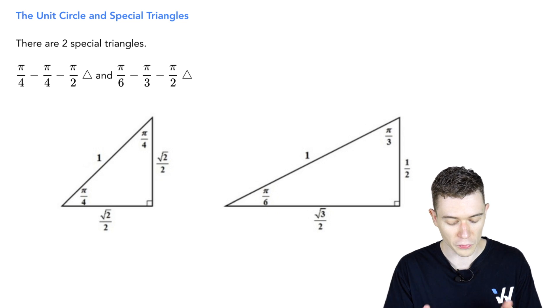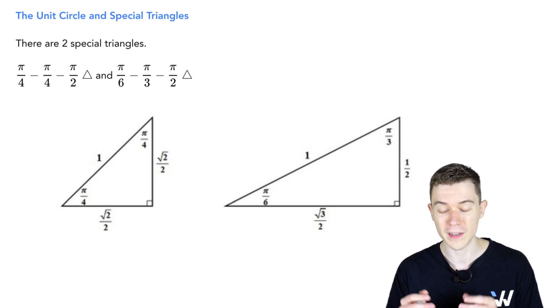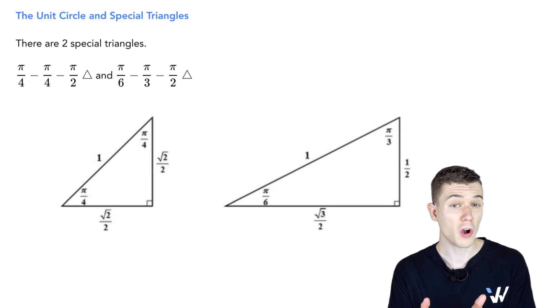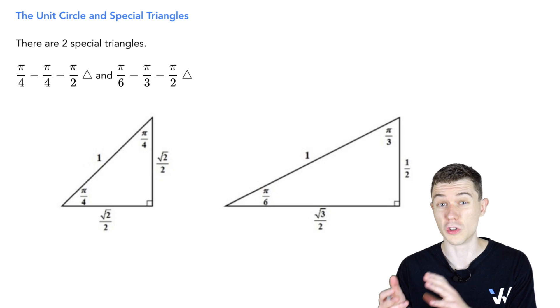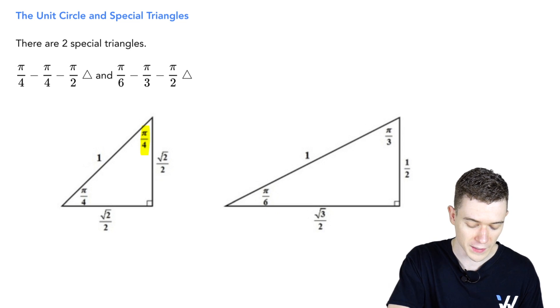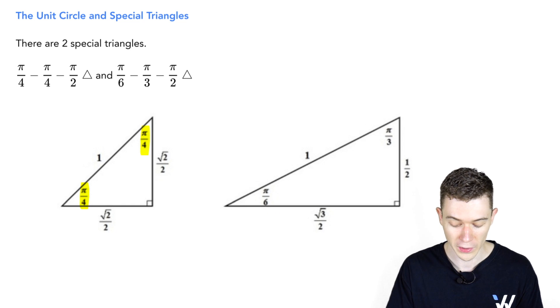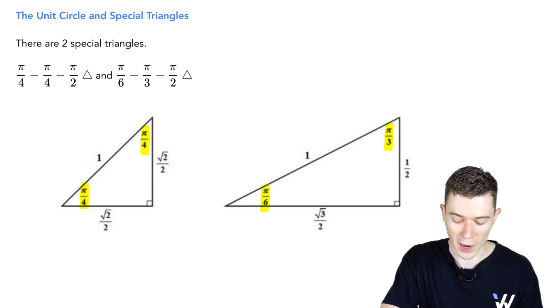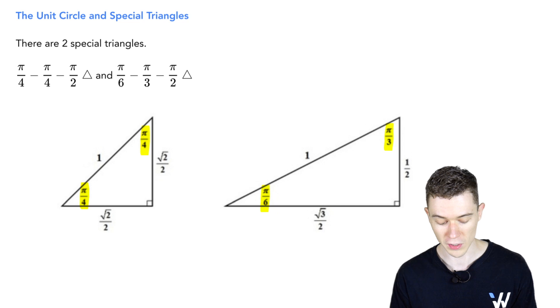We have a so-called 45-45-90 triangle and a 30-60-90 triangle. They're called that because of their measures of degrees, but if we're talking about radians, 45 degrees is pi over 4 radians, 30 degrees is pi over 6, and pi over 3 is at 60 degrees.